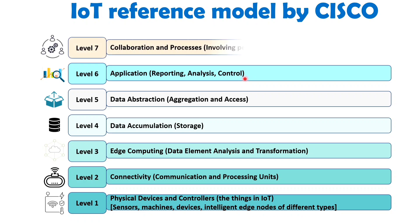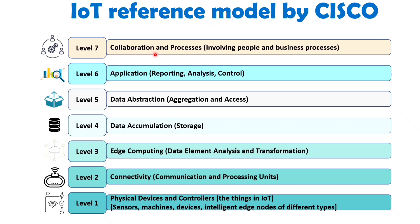The highest level, level seven, involves Collaboration and Processes — integrating people and business processes. This layer emphasizes the integration of IoT systems with human-centric workflows and business processes. It includes applications and tools that enable collaboration, automation and integration with existing business systems. By utilizing reference models like Cisco's, organizations and practitioners can effectively design, implement and manage IoT systems, ensuring interoperability, scalability, security and efficient integration of IoT components.